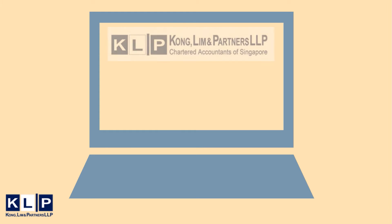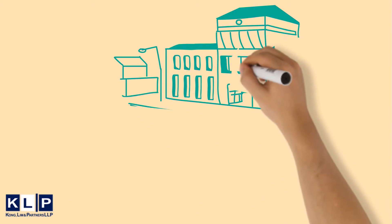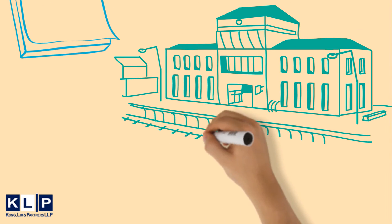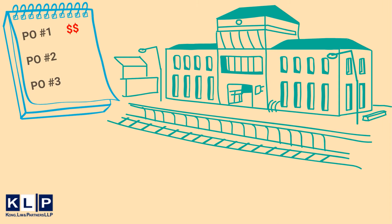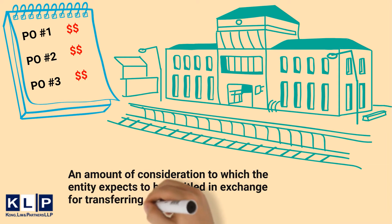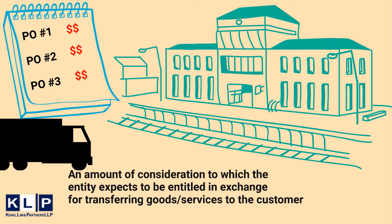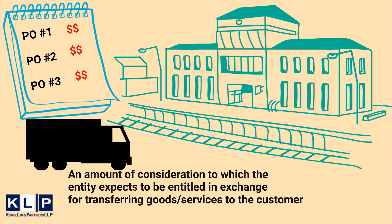This video is brought to you by Kong Lim & Partners, Chartered Accountants of Singapore and a member of JHI & TASK. The objective of this step is to allocate the transaction price to each performance obligation within a contract in an amount that depicts the amount of consideration to which the entity expects to be entitled in exchange of transferring the promised goods or services to the customer.